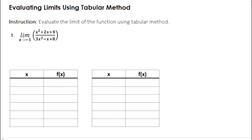Hi! Today, let's evaluate limits using the tabular method. Let's start with our first example. We need to evaluate the limit of x squared plus 2x plus 4 over 3x squared minus x plus 8 as x approaches negative 1.